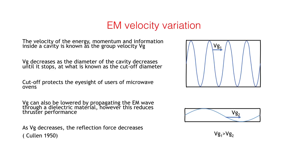This is known as the cutoff point. The holes in the protective screen of a microwave oven door are a good example of this effect, as they are well below cutoff diameter for the operating frequency of the oven but above that for visible light. vg can also be reduced by inserting a dielectric element into the cavity.